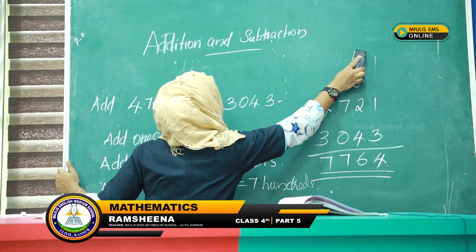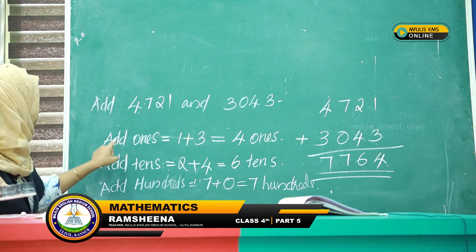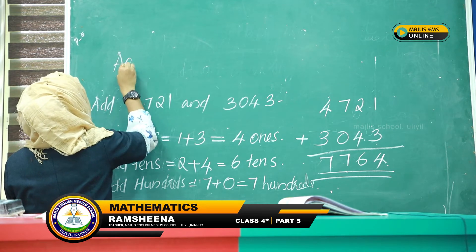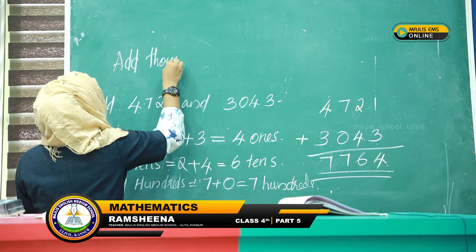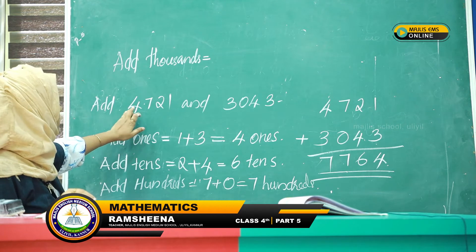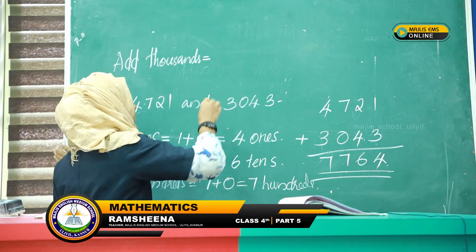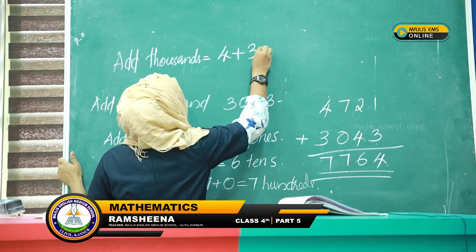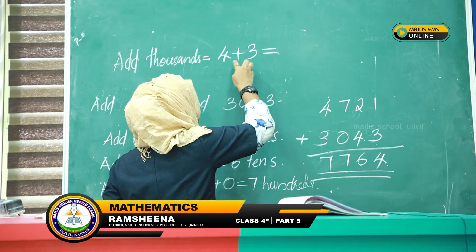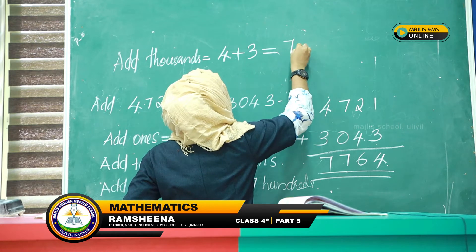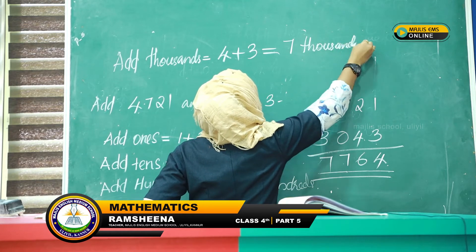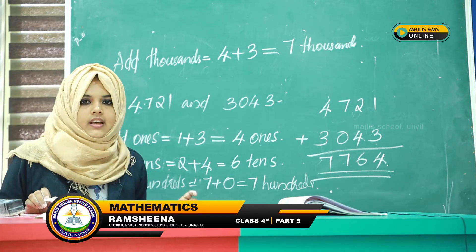Then the last one: we add thousands. Which number stands in the thousands place? The number 4 and 3. 4 plus 3 is equal to 7. That is 7 thousands.